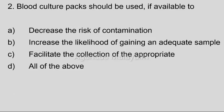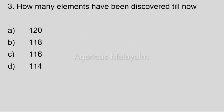Third question: How many elements have been discovered till now? Option A: 120; option B: 118; option C: 116; option D: 114. Correct answer: option B, 118.